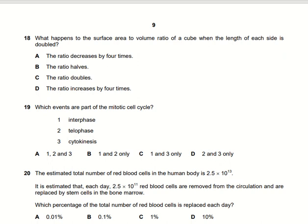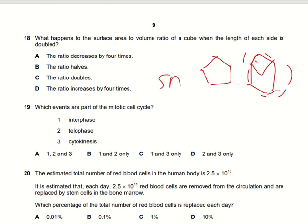What happens to the surface area to volume ratio of a cube when the length of each side is doubled? When each side is doubled, the surface area increases but the volume increases more, so the surface area to volume ratio becomes half.